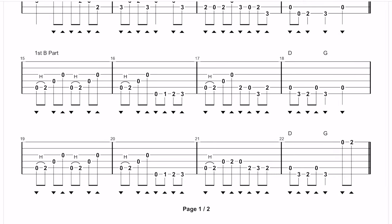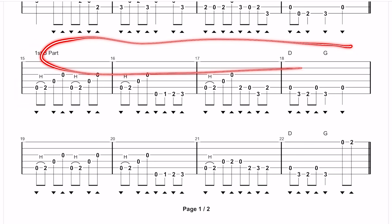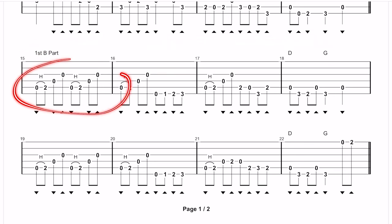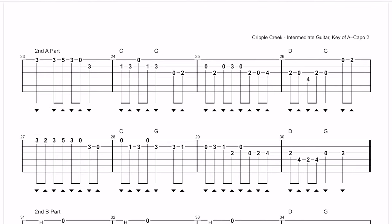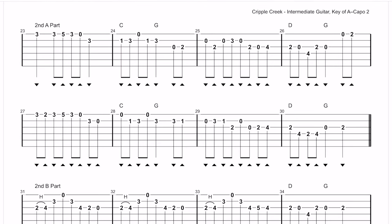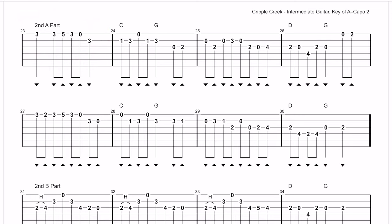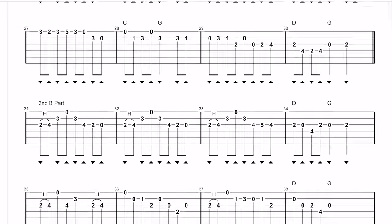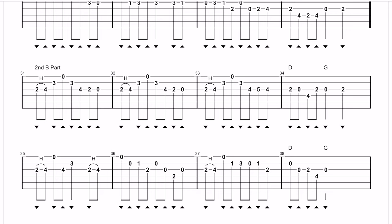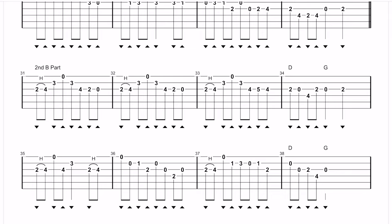After the first A part, like I said, we're going to the first B part — that's going to be eight measures long, and the chord progression and melody are a little different. As we jump over to the second A part and second B part, the chord progression repeats what we saw previously in those respective parts. But we're actually going to jump up an octave to create some more variation. Then we go into a second B part to wrap up the tune.